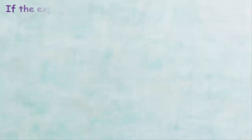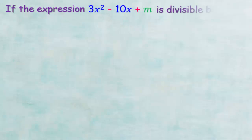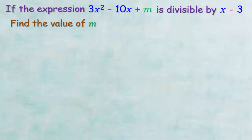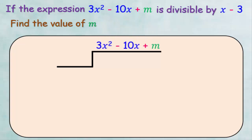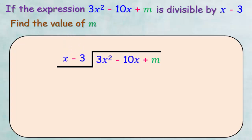Let's see the last example with a different idea. If the expression 3x squared minus 10x plus m is divisible by x minus 3, find the value of m. Since it is divisible by x minus 3, the remainder is 0. We draw the division sign, write the dividend and divisor, making sure both are arranged in descending order of the power of x.